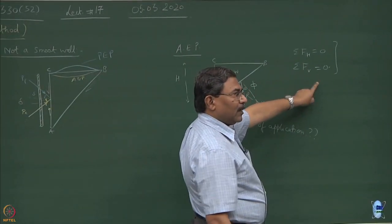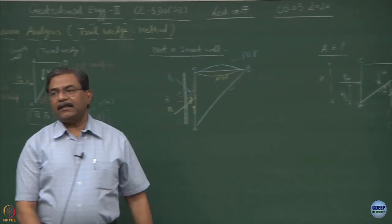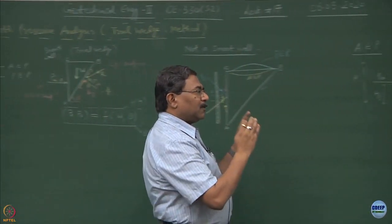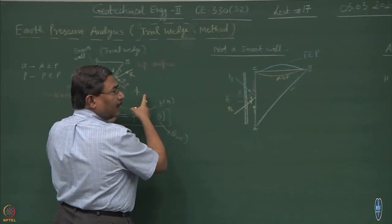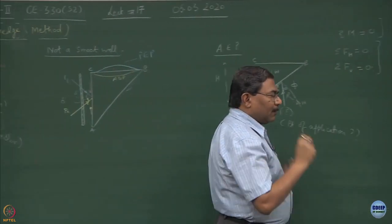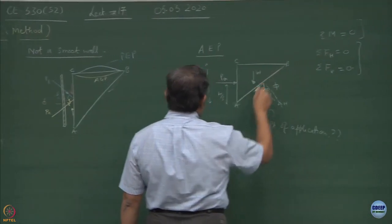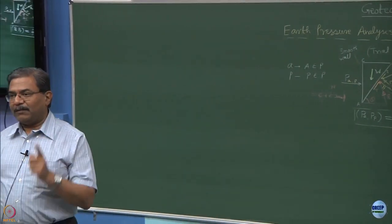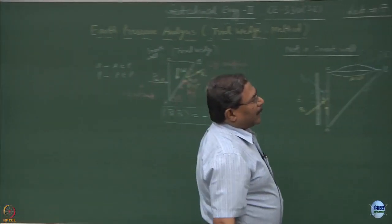Where is the third equation I can use? I can use the moment equation and equilibrate that to zero as well. This method is known as the limit equilibrium method — you are talking about the limiting equilibrium of the block. The limit comes from the fact that failure has not occurred; the system is at the verge of failure. In mechanics, you use the term incipient motion — at the verge of failure, at the verge of movement. This block under all circumstances remains in equilibrium, but it is on the verge of failure because of the plastic state of equilibrium forming in the backfill.